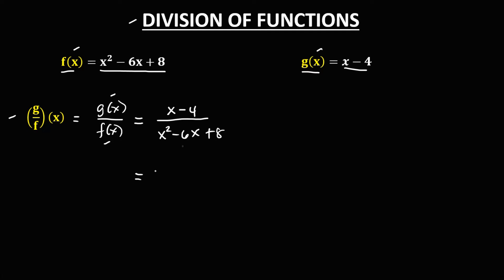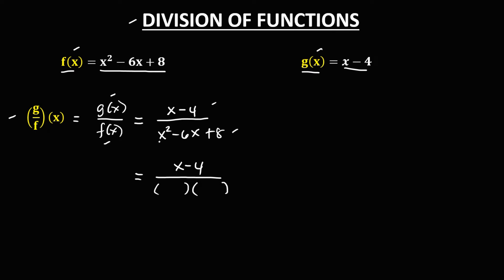To simplify, copy x minus 4 over the denominator. Since the denominator is a quadratic equation, we can find its factors. Factoring x squared minus 6x plus 8: the factors of x squared are x times x, and 8 gives us 4 times 2. Since the middle term is negative, both signs are negative. So we can cancel the (x minus 4) factor.